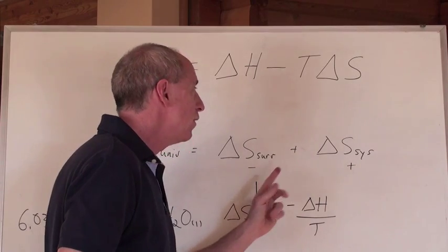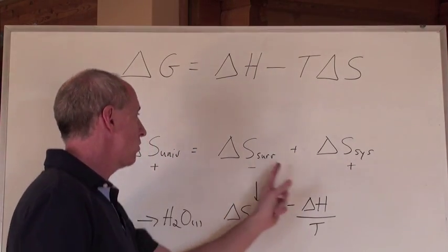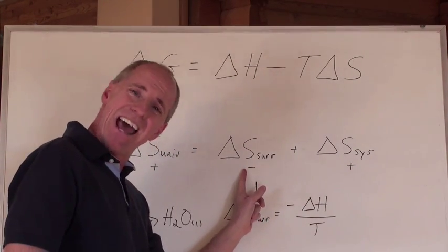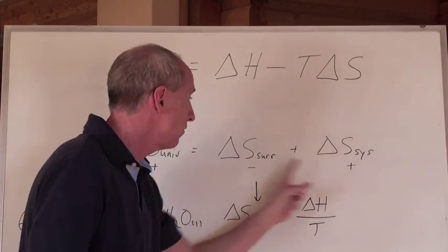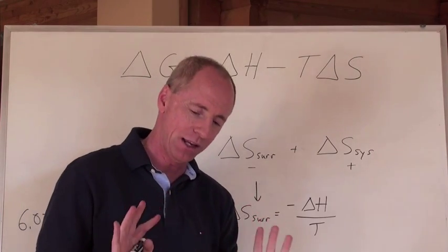If that number is a negative, the only way that this is going to be a positive is if this number right here as a negative is a smaller negative, then that is positive. Now watch this.